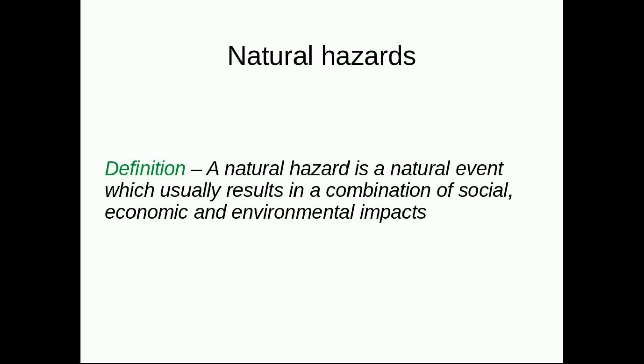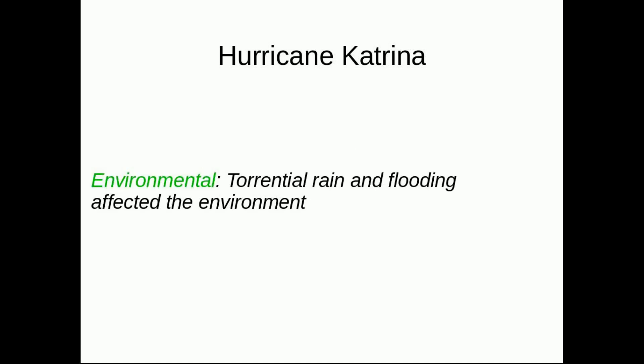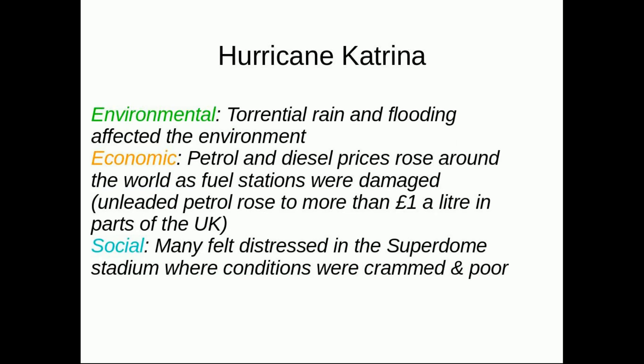Firstly, a natural hazard is a natural event which usually results in a combination of social, economic and environmental impacts. For example, when Hurricane Katrina hit America in 2005, there was vast amounts of flooding that came along with the torrential rain and damaged the environment. Petrol and diesel prices were affected globally due to the spills that occurred in the affected cities of Alabama and New Orleans. And the 20,000 people who were in the Superdome Stadium were likely distressed and kept in unhygienic and crowded conditions over the period where aid was not widely available.